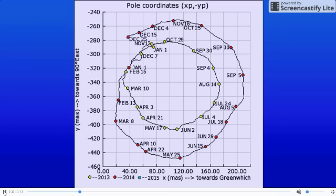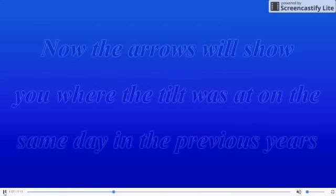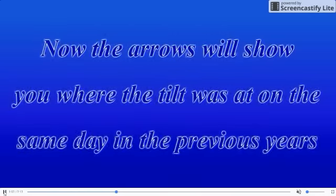Now the chart that you're viewing will depict pole coordinates and the extreme tilt of the earth. The yellow depicts 2013, the red depicts 2014, the blue will depict 2015. As you can see going into the spring of 2015, our earth's tilt has become quite extreme since 2013.